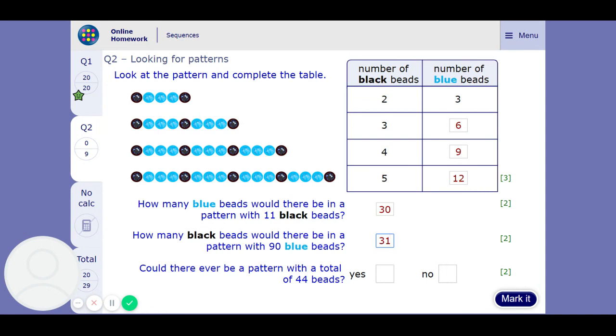So if we carry on thinking about it going up in 4's, we've got an example here where this pattern with 11 black beads and 30 blue beads has got 41 total. The next one will go up to 45 if we add on 4. So no, there won't be.